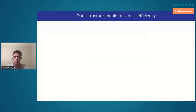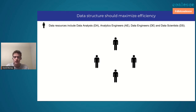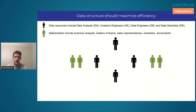So what do I mean by data team structures and how they should maximize efficiency? Any organization will have what I call data resources, and there are a bunch of different roles assigned to them — but those people work day-to-day with data. And the other kinds of people at an organization are the stakeholders — the people that those data resources are looking to serve.